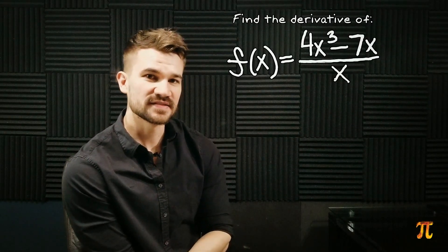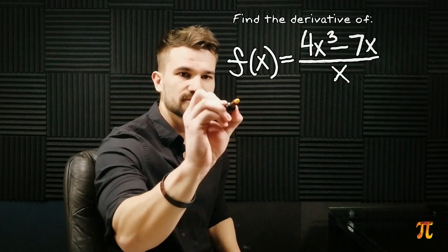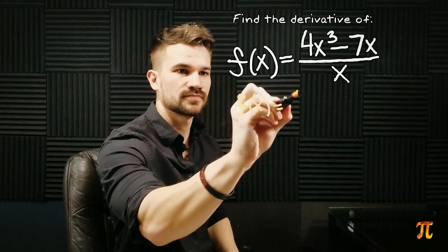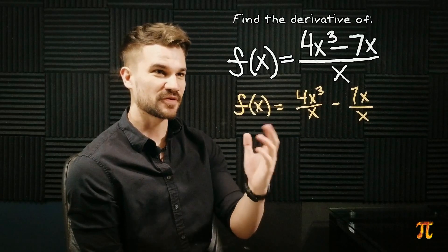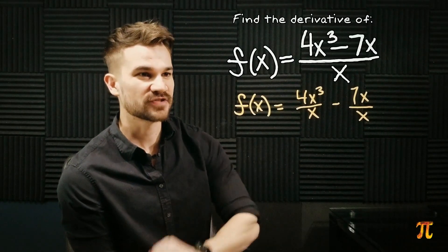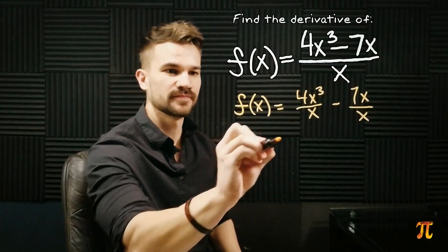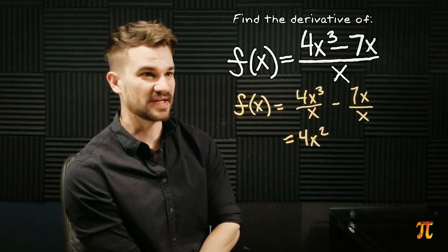So let's rewrite this by breaking this up into two fractions. Nothing wrong with that. And then we have 4x cubed over x so that's actually just 4x squared, and then we have 7x over x so that is 7.